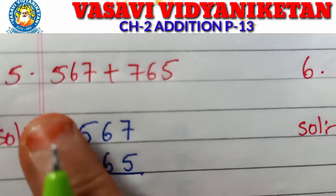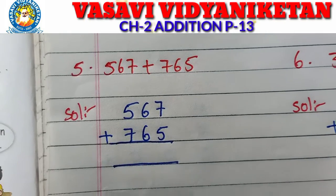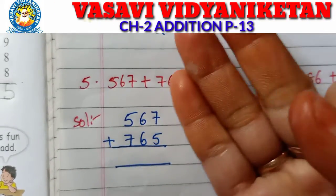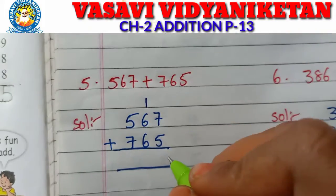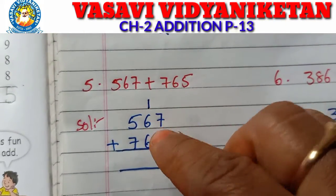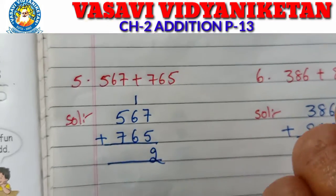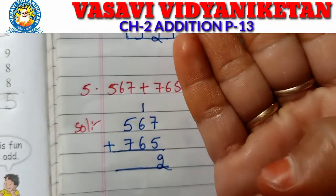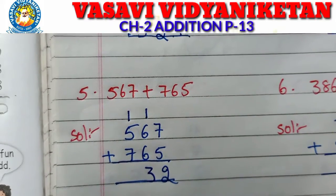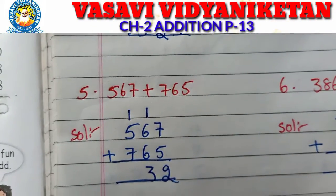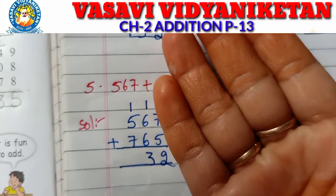Fifth problem: 567 plus 765. Take seven fingers, five after: six, seven, eight, nine, ten, eleven, twelve. How much? Twelve. One carries to the tens place, two stays in ones place. Next: one plus six plus six — take one finger, six after seven. Next: seven plus six — take seven fingers, six after: seven, eight, nine, ten, eleven, twelve, thirteen. How much? Thirteen. So the answer is 1332.